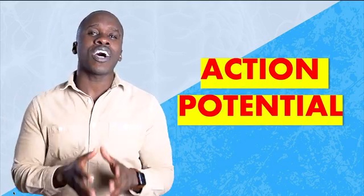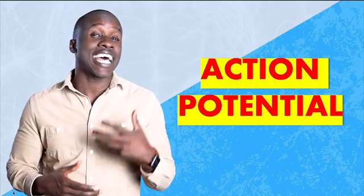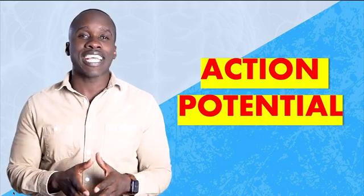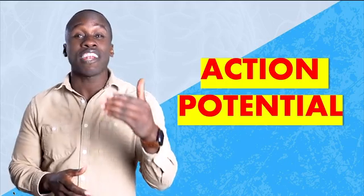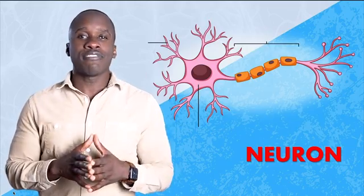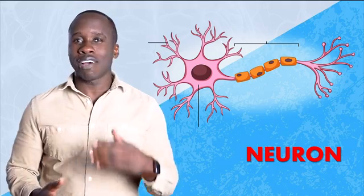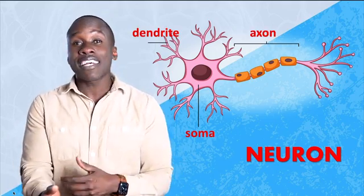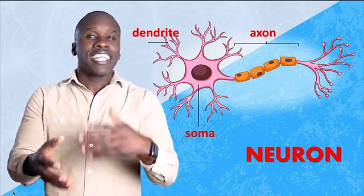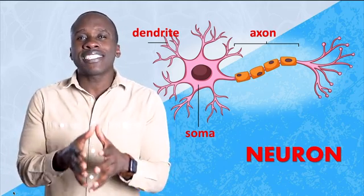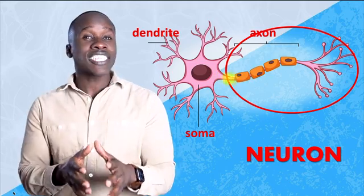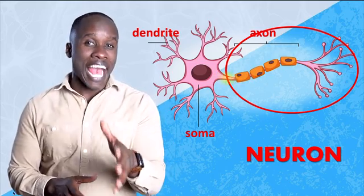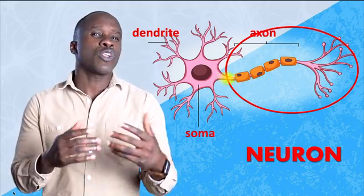Now, to understand what causes the action potential to happen, you first have to understand what's happening in the neuron at rest. First off, here we have a neuron. There are a few main parts to the neuron. We have the dendrites, the cell body, aka the soma, the axon, the axon terminals. We can get more detailed, but let's stick with that for now. The action potential happens in the axon, so let's look a little more closely at it.